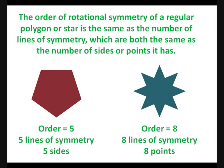The order of rotational symmetry of a regular polygon, or star, is the same as the number of lines of symmetry, which are both the same as the number of sides or points it has.